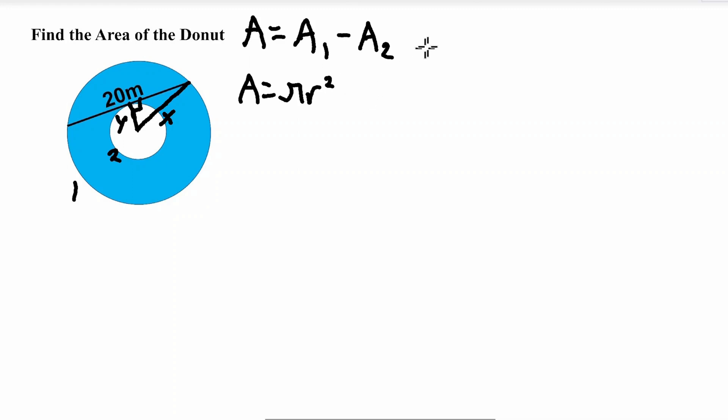So now we can improve our equation, we can update it, we can add the variables for the radiuses for each separate area. So for area one can make it pi, the radius is x for this for the first circle, pi x squared, minus for the second will be pi y squared because y is the radius for the second circle.